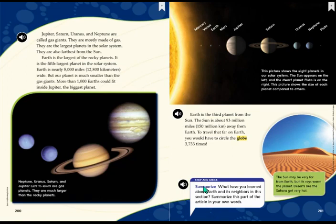Here we need to summarize again. It says, what have you learned about Earth and its neighbors in this section? Summarize this part of the article in your own words. Well, from this section, I have learned that Earth is the fifth largest planet. It is the largest of the rocky planets, but it's smaller than the gas giants. The gas giants are the largest planets and the farthest from the sun. Earth is the third planet from the sun.